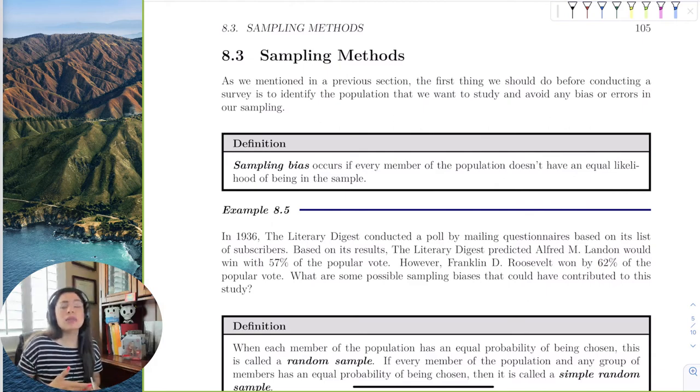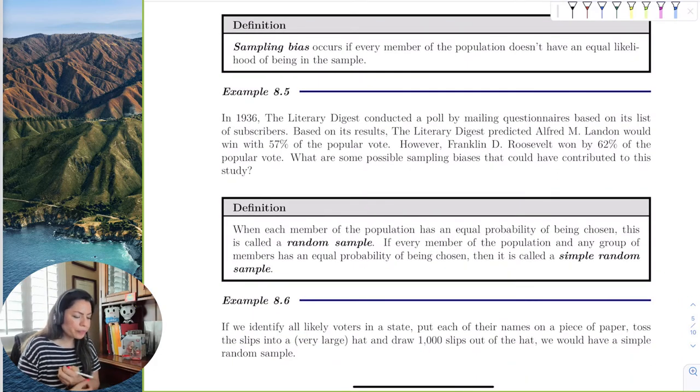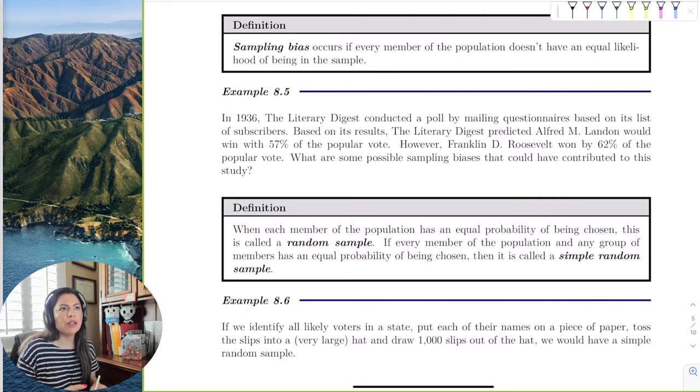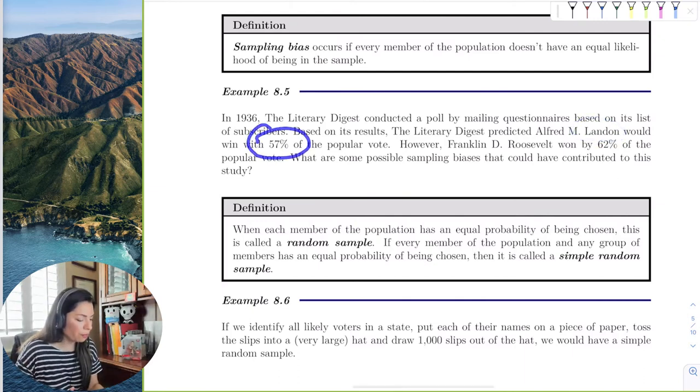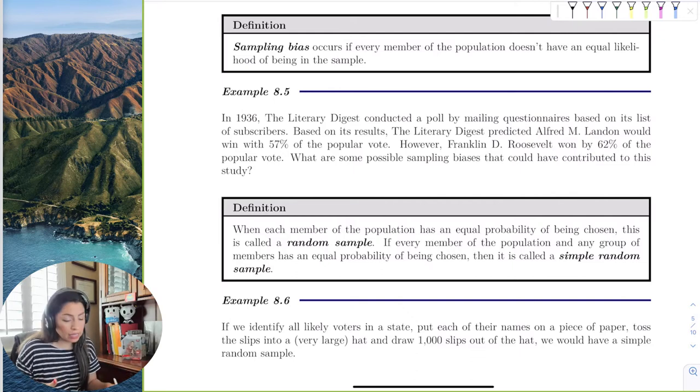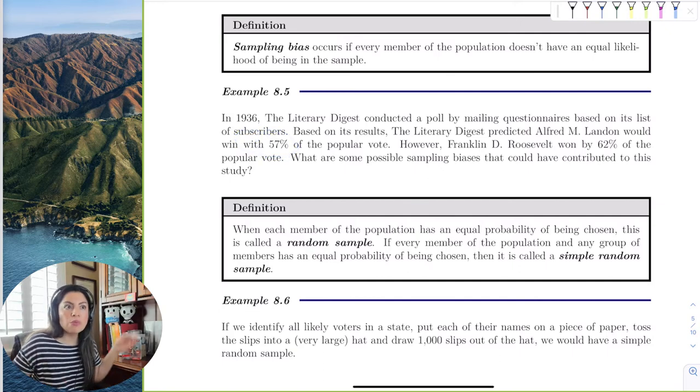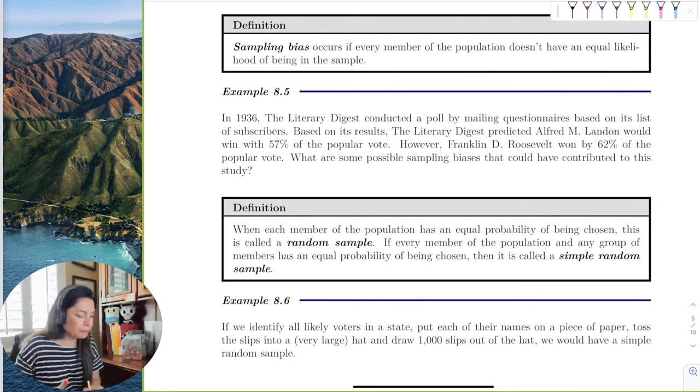So we just need to make sure, sampling bias occurs because we're not conscious of how we're taking our samples. I have a good example here of the Literary Digest. They conducted a poll back in 1936, and they mailed out questionnaires, snail mail, and based on its result, the Literary Digest predicted Landon would win with the popular vote by 57%. And then Roosevelt won by 62% in actuality.